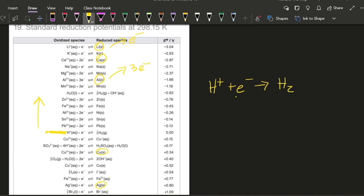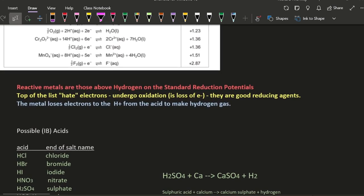So by shoving the electrons onto the H pluses, you get hydrogen gas formed. In more IB language, at the top of the list, well, they hate electrons. That's my language. That means they undergo oxidation. Oil rig. Oxidation is loss of electrons. If they hate electrons, they're throwing them off. That means they're good reducing agents though. Reducing agent is itself oxidized. And so when the metal loses electrons, it goes to the H plus from the acid and makes hydrogen. We just did that.